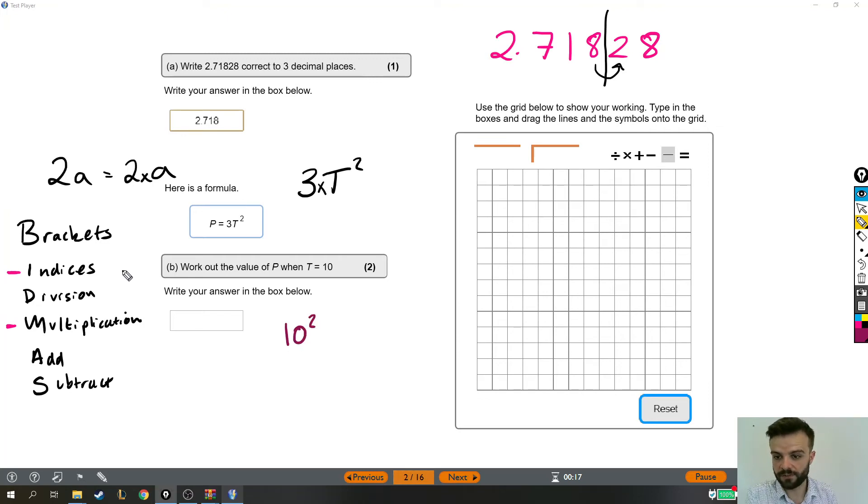We're doing it first because indices go first, and indices means like squares, square roots, that kind of thing. And 10 squared is 10 times 10, which is 100. And that's actually the first thing that I can put in my working out box. We just did 10 times 10 equals 100.